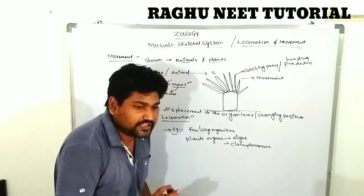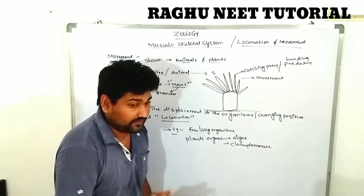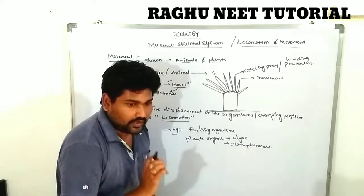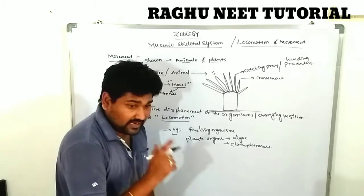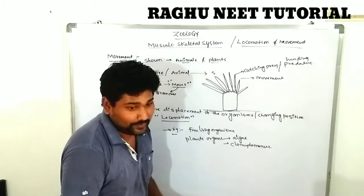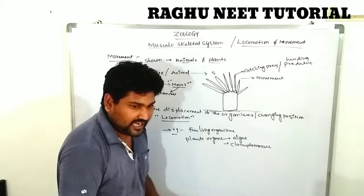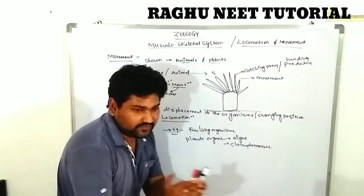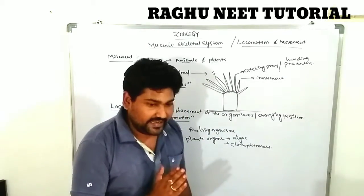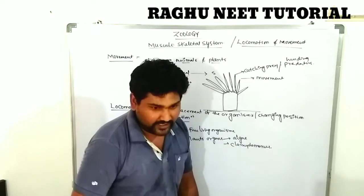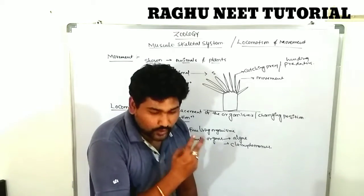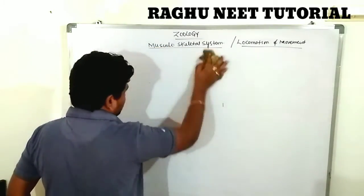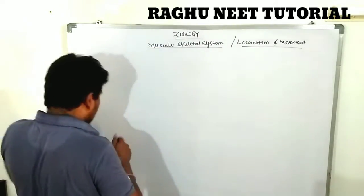Locomotion depends on the skeleton as well as muscle. Some primitive animals in the animal kingdom show non-muscular movement, and others show muscular movement. According to the involvement of the organ, movement is classified into two types: non-muscular movement and muscular movement.